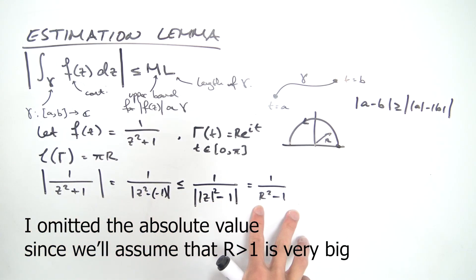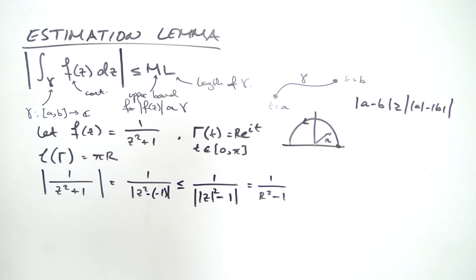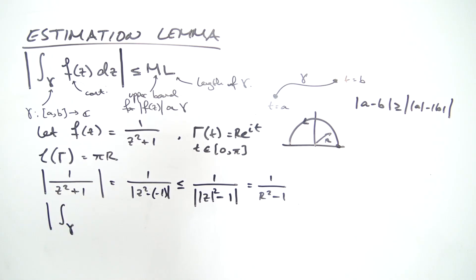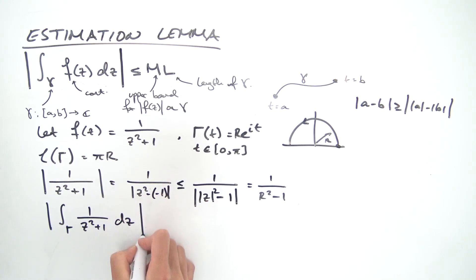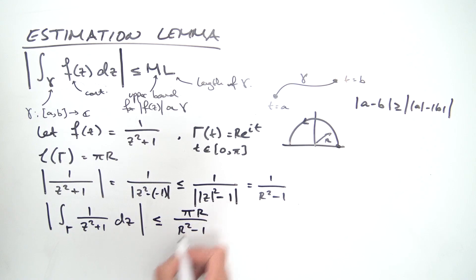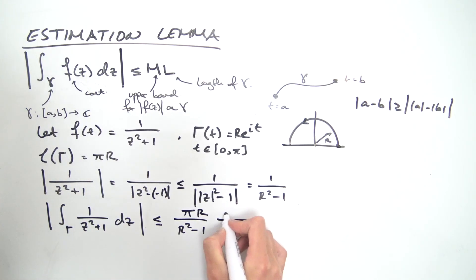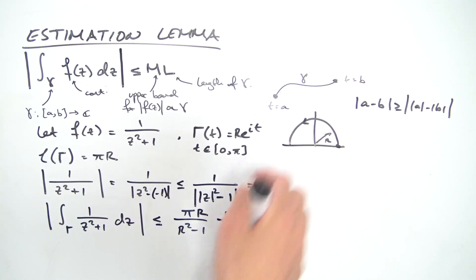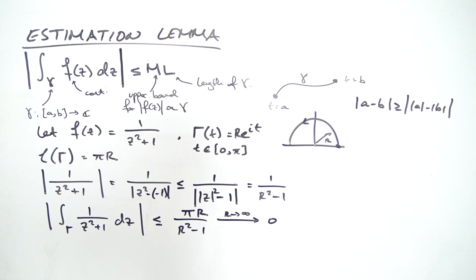Applying the ML inequality, the absolute value of the integral over Gamma of 1/(z² + 1) dz is less than or equal to M times L, which is (1/(r² - 1)) times (pi·r). Taking the limit as r approaches infinity, this goes to zero because the quadratic in the denominator dominates the linear term on top. So using the ML inequality we can show integrals over semicircles vanish as r goes to infinity.